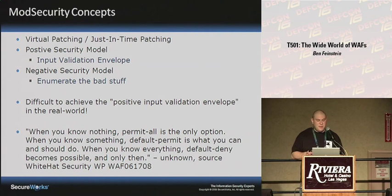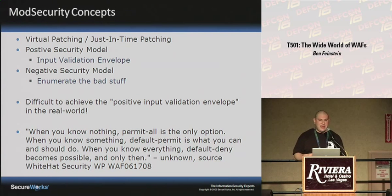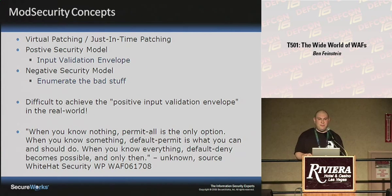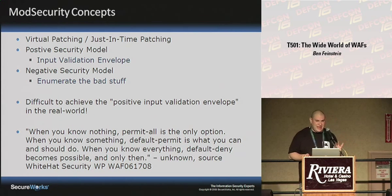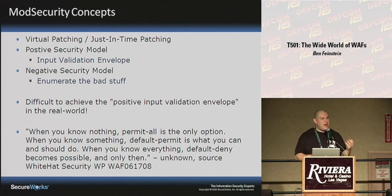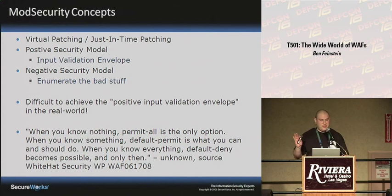The negative security model is basically trying to enumerate the bad stuff, block it — look for SQL injection, cross-site scripting — and block it. Products typically have learning modes where they observe web traffic and try to build that positive input validation envelope. There's a quote from a White Hat Security white paper: 'When you know nothing, permit all is your only option. When you know something, default permit is what you can and should do. But only when you know everything can you do default deny, and only then.' That sums up the difficulty of building this positive input validation envelope.